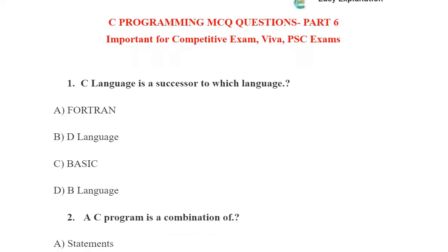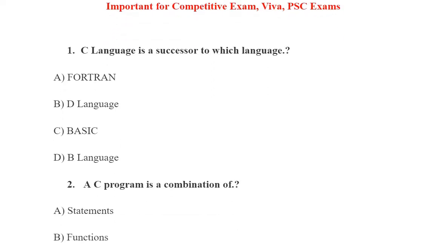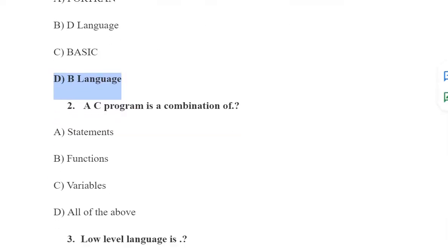Let's come to the first question: C language is a successor to which language? The options are Fortran, D language, BASIC, and B language. Fortran is not the answer, D language is not the answer, BASIC is also not the answer. B language is the correct answer, option D.